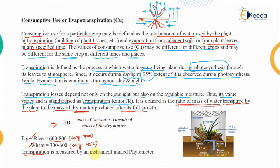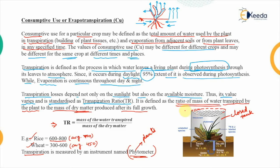The transpiration amount is measured by an instrument named the phytometer. The prefix 'phyto' refers to plants. This measurement method using the phytometer is widely used and consists of a closed, watertight tank containing sufficient soil to nourish the plant. Water is provided artificially from external sources so that the plant can grow inside it. A formula is used to calculate how much transpiration has occurred.